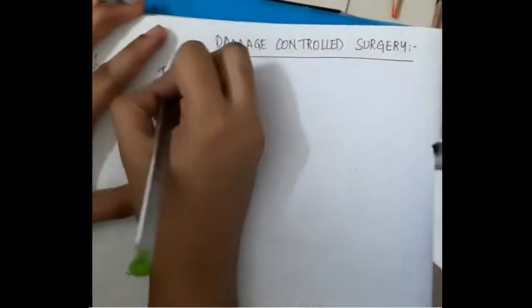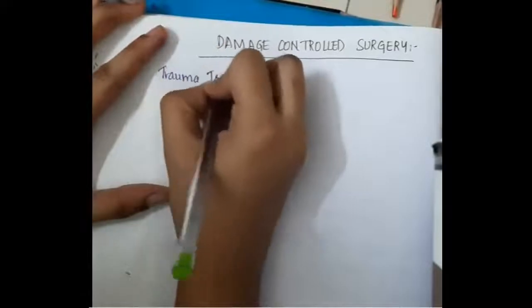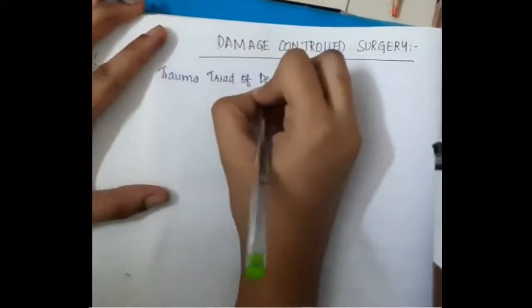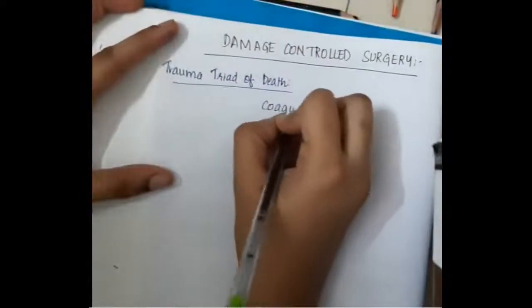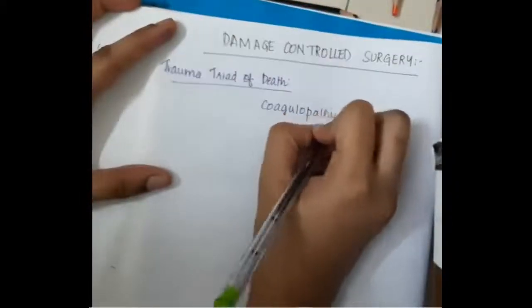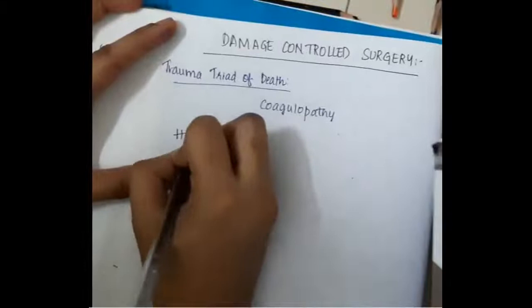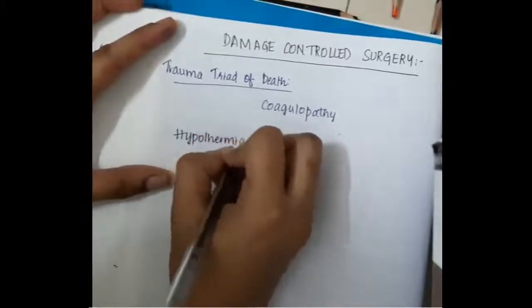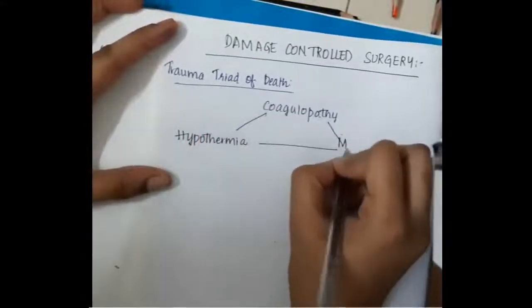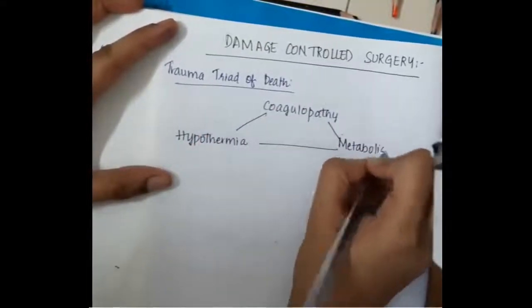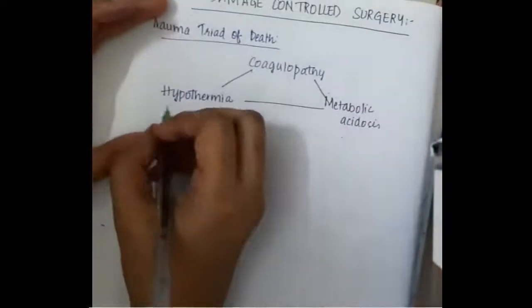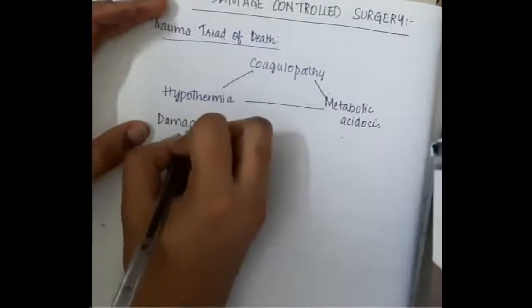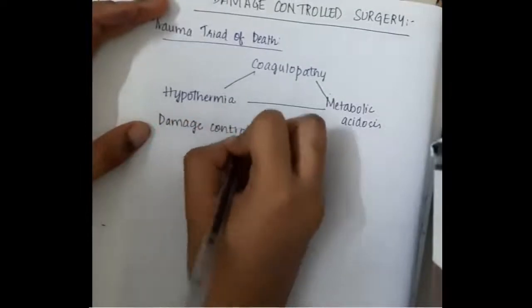Hello friends, let us now learn some important points about damage controlled surgery. In trauma, there is a triad of death which includes coagulopathy, hypothermia, and metabolic acidosis.